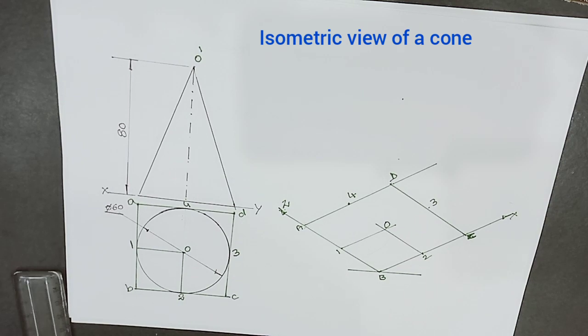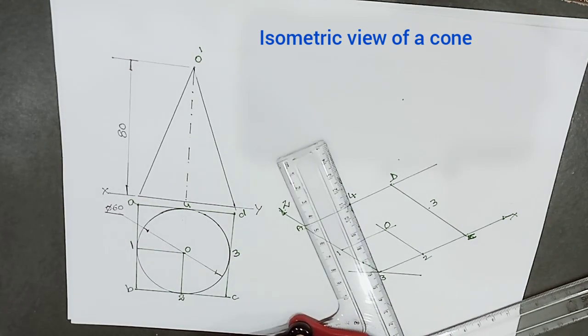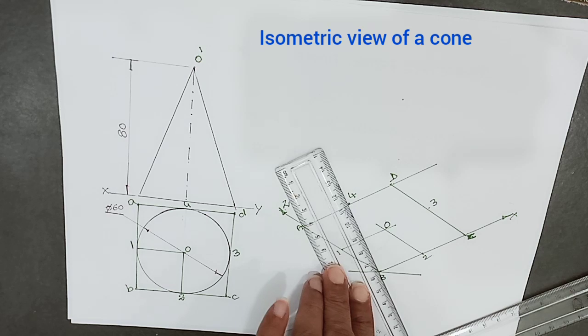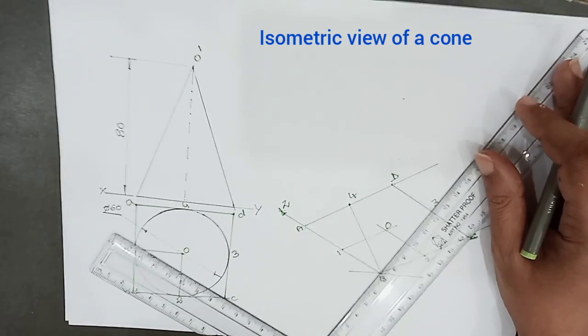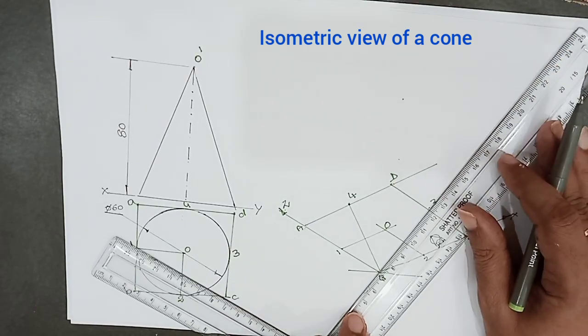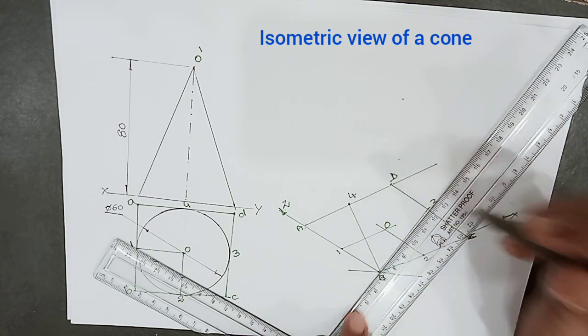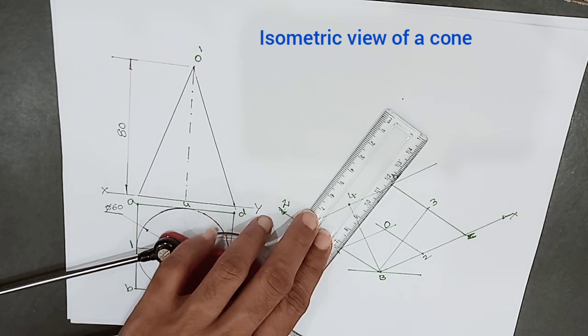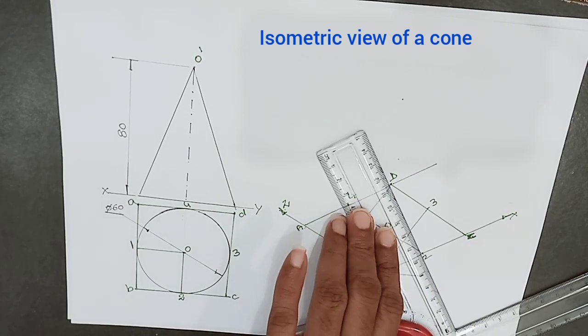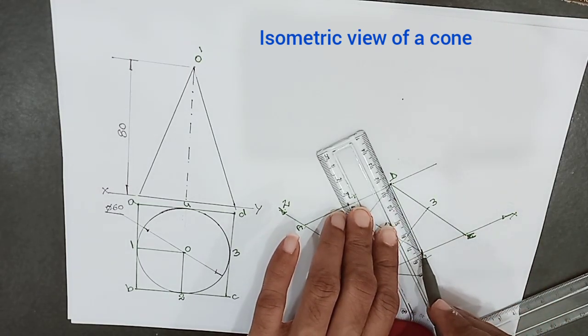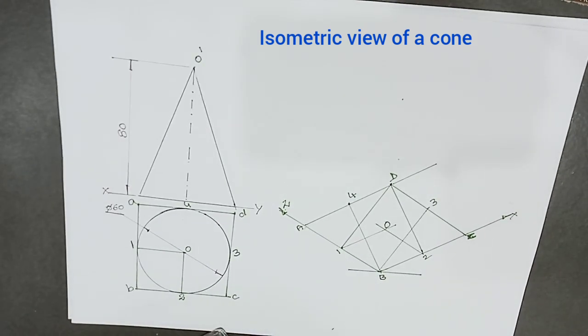Now we have to construct the circle in isometric view. We already located the midpoints on respective sides of the square. Join B to the opposite midpoints - B to 4 and B to 3. Similarly, join D to 1 and D to 2.